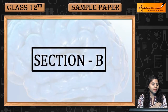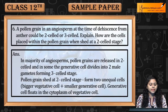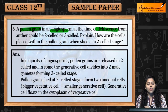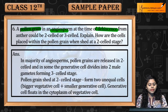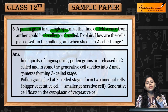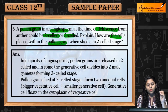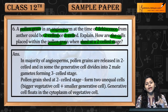Section B, Question No. 6: Pollen grains in an angiosperm at the time of dehiscence from anther could be 2-celled or 3-celled. Explain. How are the cells placed within the pollen grains when shed at 2-celled stage?